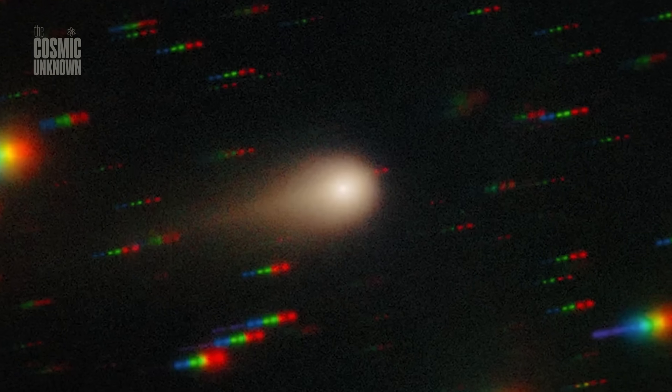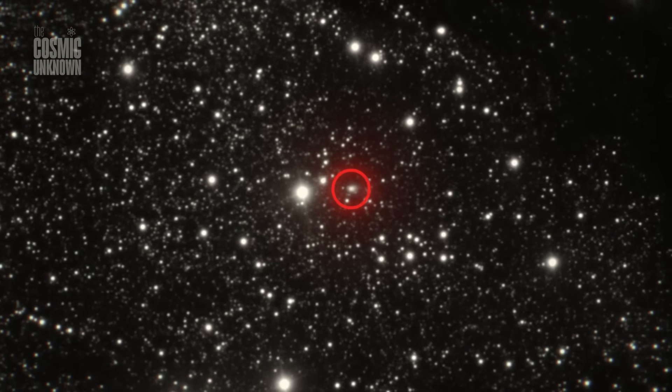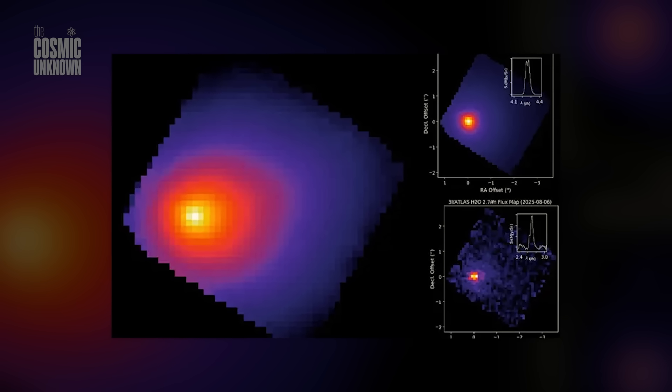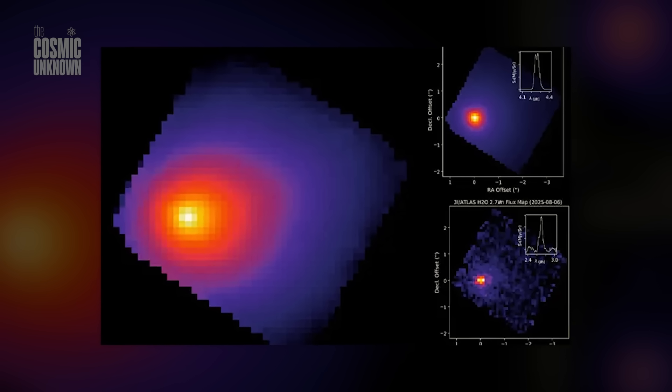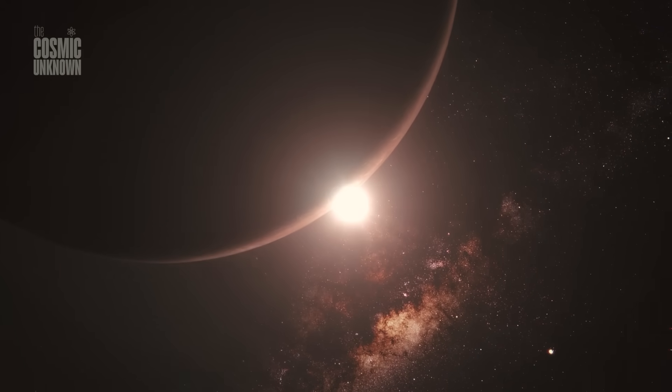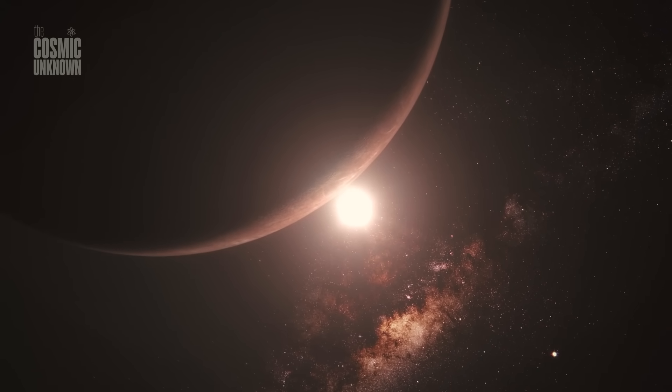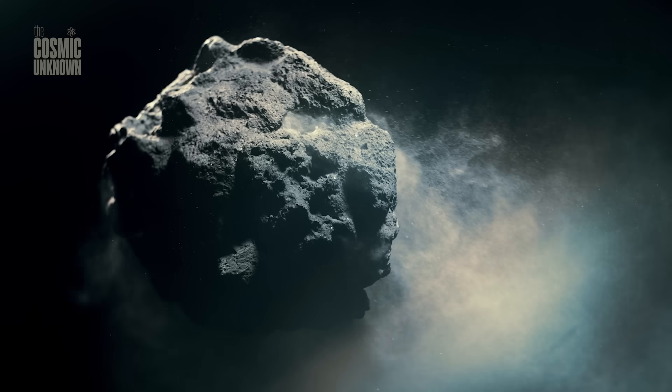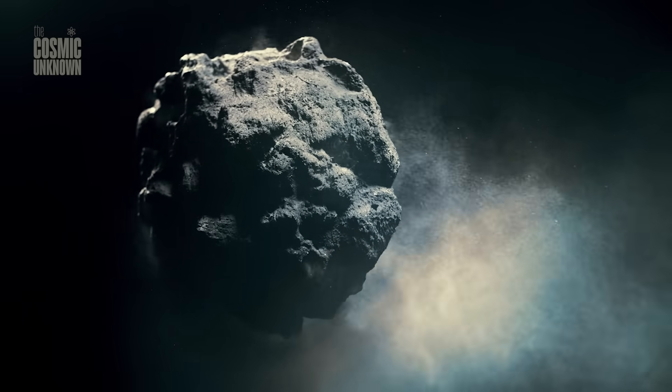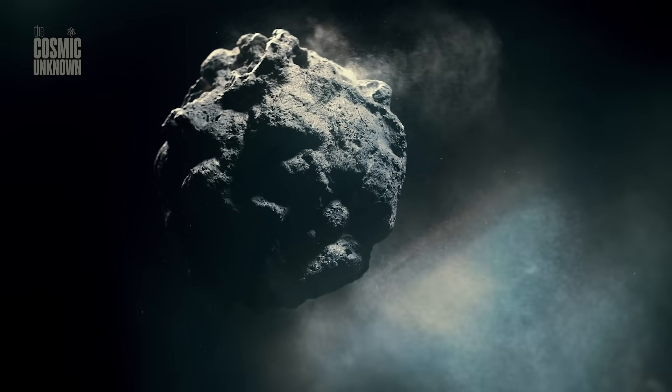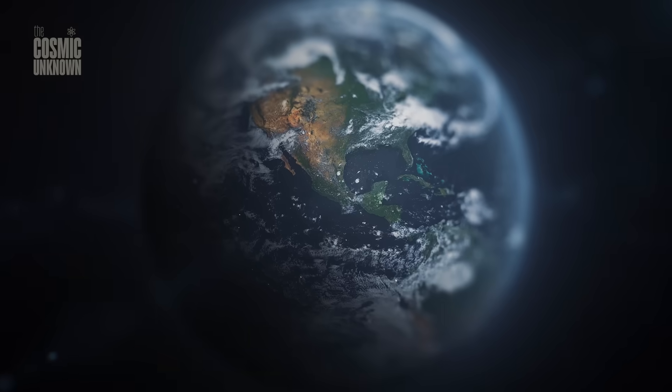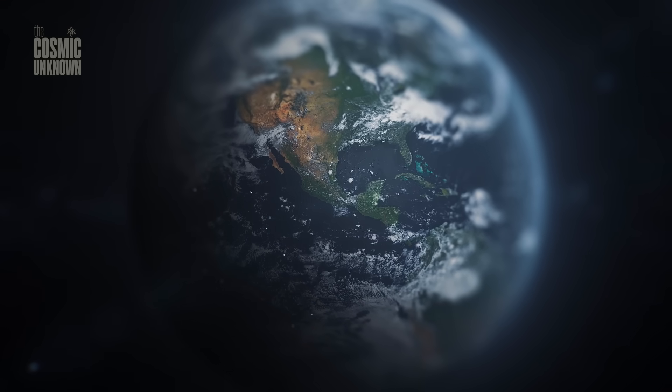Not because it's hiding, but because we're simply in the wrong place. Still, the internet's filled with hype. Claims that it's heading toward us. That we'll see something spectacular. But those claims ignore the geometry. 3i Atlas isn't aimed at Earth. It's moving across the inner system at an angle that brings it closer to Mars.